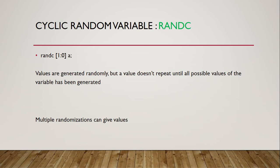Let's look into the answer. For a cyclic random variable, values are generated randomly but a value does not repeat until all possible values of the variable has been generated.